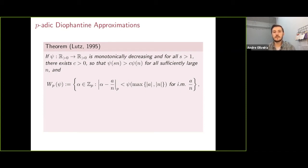So if we take this function psi that's monotonically decreasing and has this new mild regularity condition, then we can ask about the numbers that can be approximated infinitely often by rationals a over n that get within psi of now the max of the numerator and denominator.